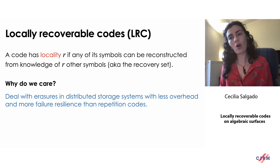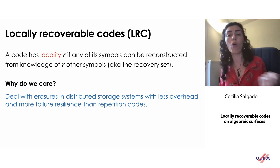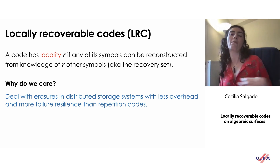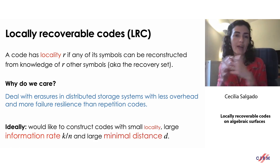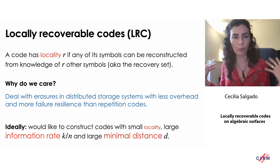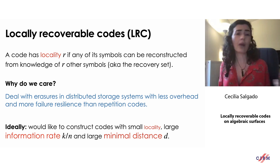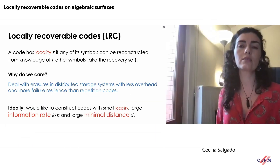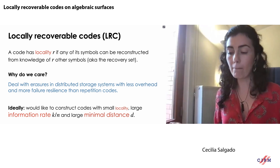Why do we care? This helps us deal with failures in distributed storage systems. One naive approach — mentioned by Beth yesterday — was simply to repeat the message three times, which costs 200% overhead. Locally recoverable codes let you deal with more failures by paying much less of a price. The dream code has small locality r, a large information rate so you don't add much redundancy, and large minimum distance. But once again there is a price to pay — you cannot have it all.